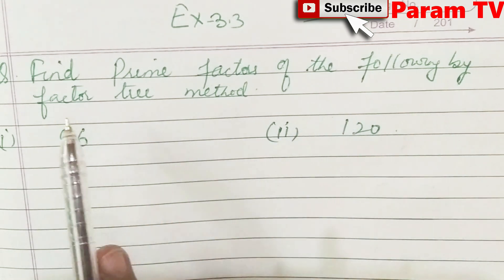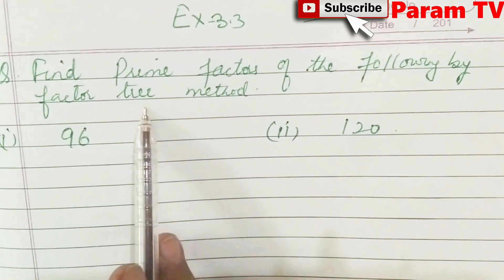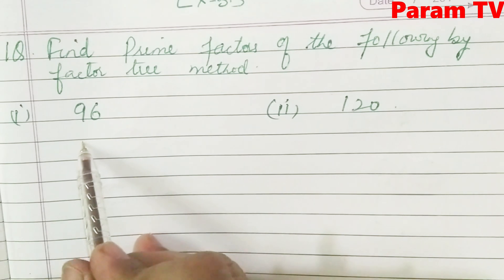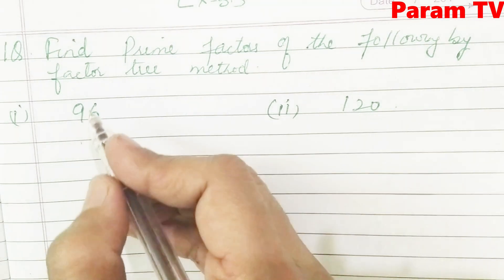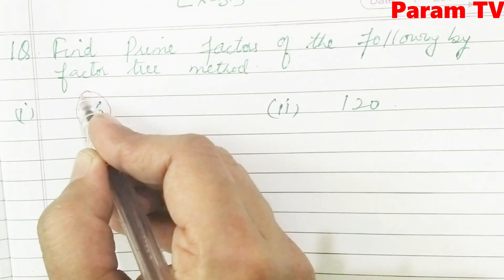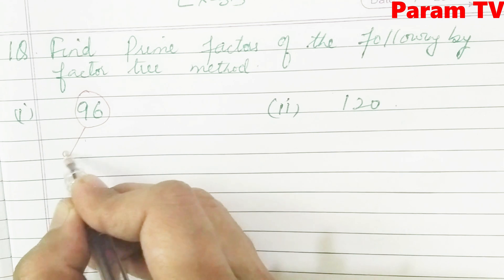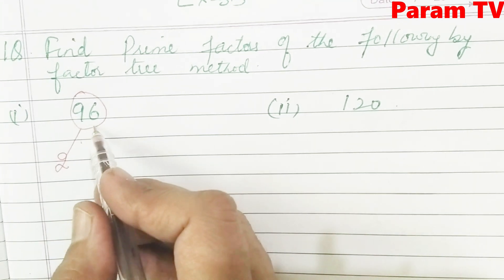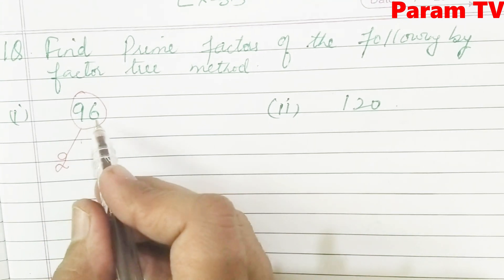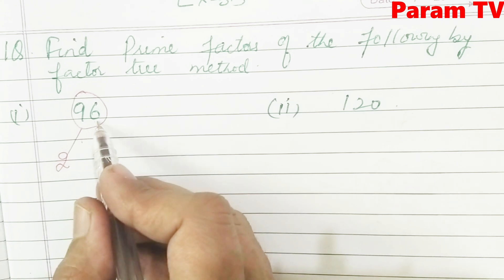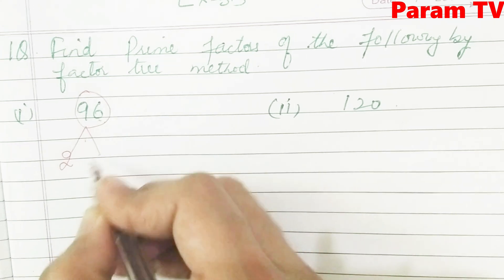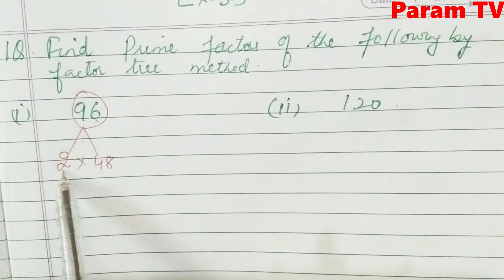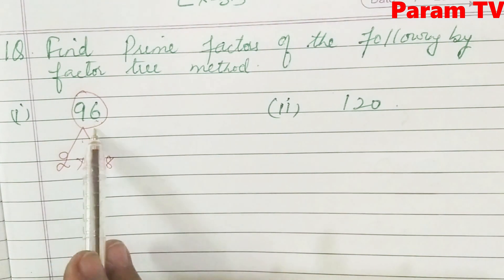Find the prime factor of the following by factor tree method. First is 96. The smallest prime number is 2. We check divisibility — the last digit is 6, so 96 is divisible by 2. Circle 96, then 2 into 48 is 96.